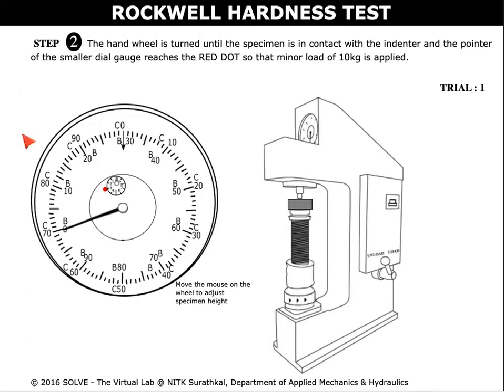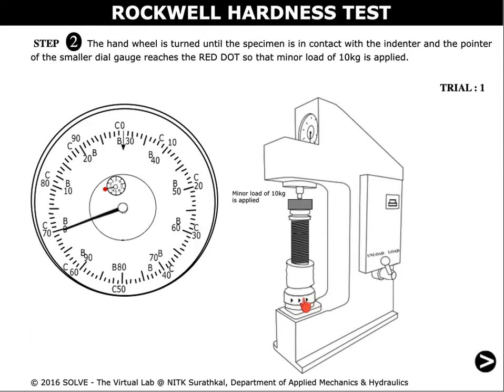Once the specimen is placed in the supporting table, turn the hand wheel by moving the mouse pointer until the specimen is in contact with the indenter and the pointer in the smaller dial gauge reaches the red dot, so that a minor load of 10 kg is applied.